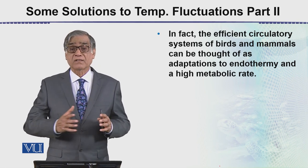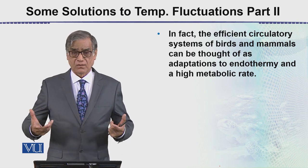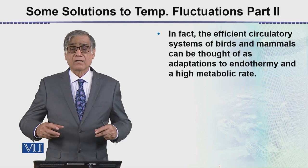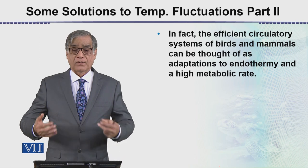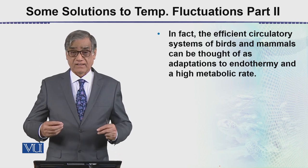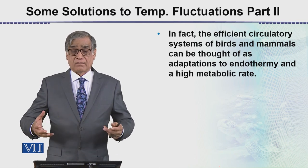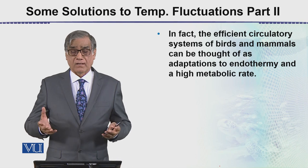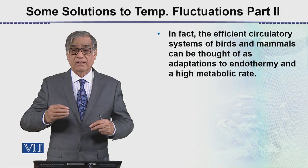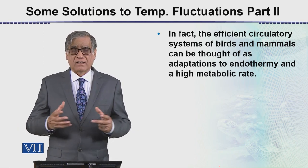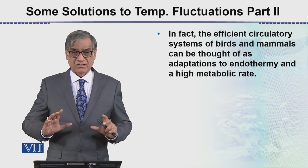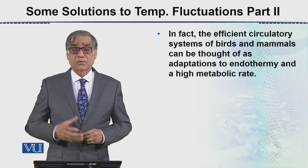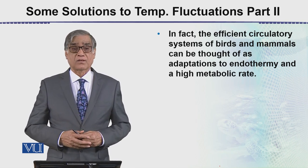In summary: some animals are ectotherms, which maintain body temperature according to their environment; homeotherms maintain body temperature irrespective of environmental fluctuations; heterotherms have a fluctuating body temperature and use strategies like torpor (as in hummingbirds and shrews) or hibernation (as in higher mammals). During hibernation, food intake stops but fat reserves are used to maintain basic metabolic rate. This is how animals solve temperature-related problems.